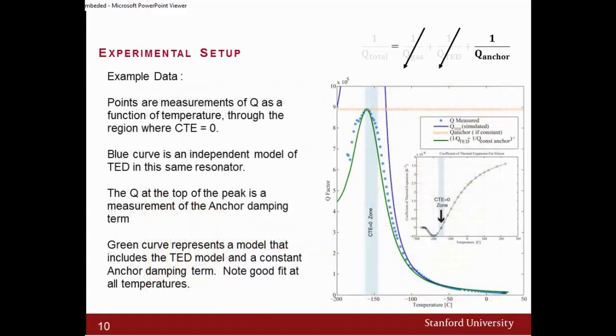These are the results from taking those measurements. The first graph, the asterisk indicates the measured data. We start at room temperature and we go all the way to negative 182 Celsius. We assume that the highest point from that measurement is actually Q-anchor. That's Q-anchor because at that point, the CTE goes to zero, so we don't have any thermoelastic dissipation, we don't have any gas damping. The only thing that we have left is actually anchor damping.